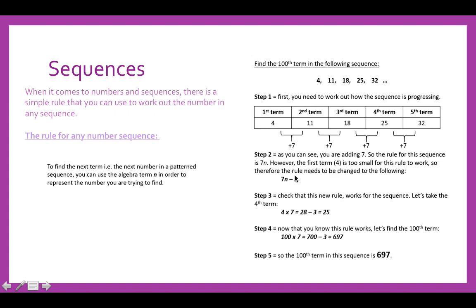However, the first term 4 is too small for this rule to work. Therefore, the rule needs to be changed to the following: 7n minus 3. This applies to all of them. You need to make sure that it applies to the first term because the first term will be a smaller number. Check that this new rule works for the sequence. Let's take the fourth term for example: 4 times 7 equals 28, minus the 3 gives you 25. Now that you know that this rule does work, let's find the hundredth term. 100 times 7 would give you 700, minus the 3 would give you 697.